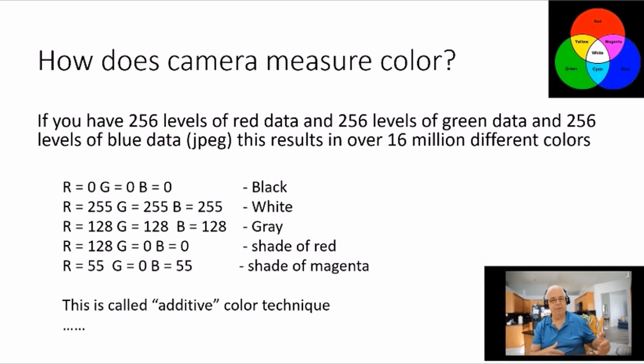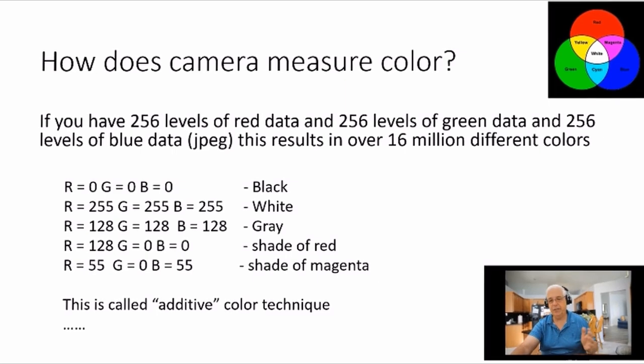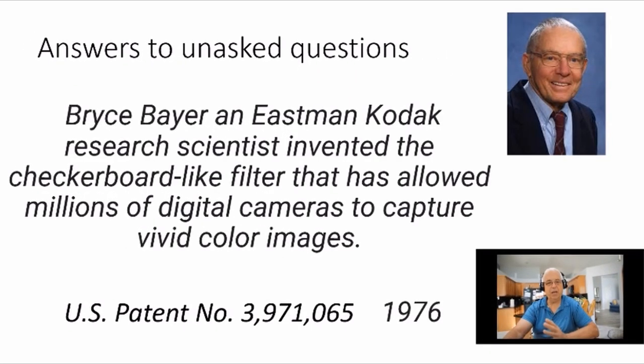Now if the red is 128 and the green is zero and the blue is zero, well, it's only measuring red light. So that was a pixel that was struck solely by red light. If red is 55, green is zero, blue is 55, that becomes a shade of magenta. The technique is called an additive color technique.